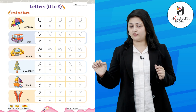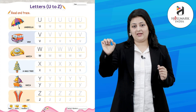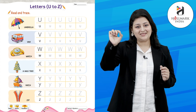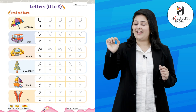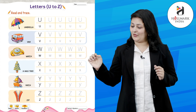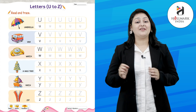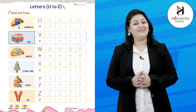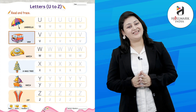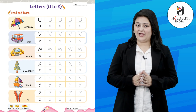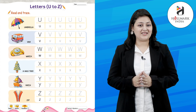Next alphabet is V. We need to trace the capital V like this, and a small V like this. V for van.